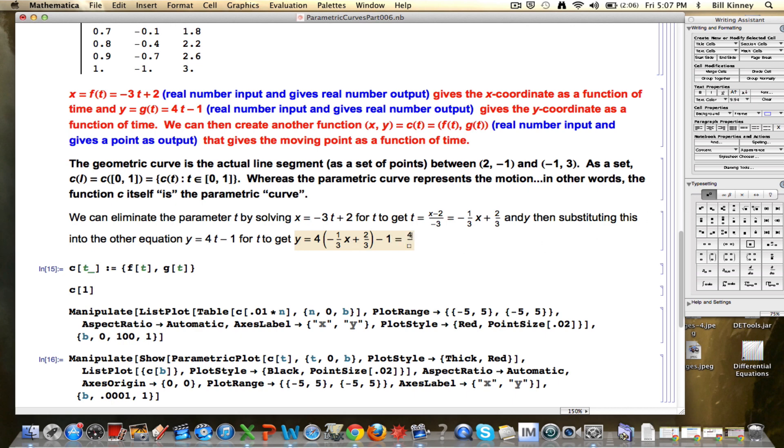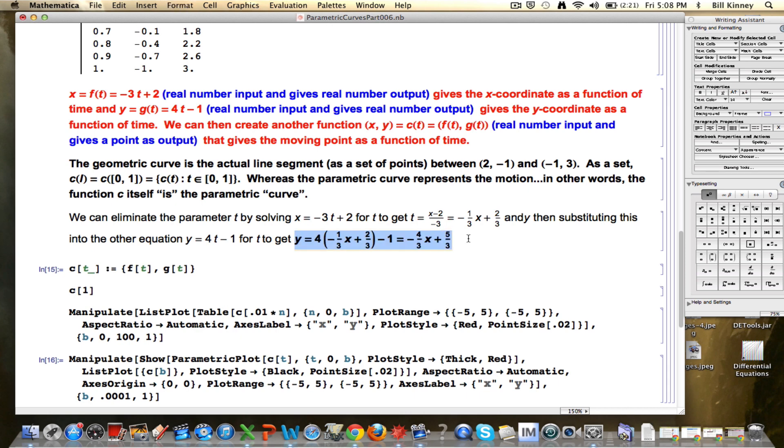What would we get? We would get -4/3 x and then plus 8/3, think about this here, minus 1. The 8/3 would come from 4 times 2/3. I'm using the distributive property there. 4 times 2/3 is going to be 8/3. Minus 1, which is 3/3, would be 5/3. And this equation right here is the result of what we get when we eliminate the parameter.